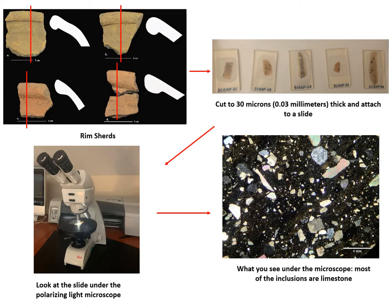The process for making ceramic thin sections is very similar. We usually analyze rims because they provide information on chronology and vessel form that may be important to how we interpret the petrographic data. Ceramics are much more porous than rocks because they contain both clay and rock and mineral inclusions. The ceramics first need to be impregnated with a clear epoxy prior to mounting them on the slide so that they can be cut down to 30 microns thick. Then we analyze the slides using a petrographic microscope.